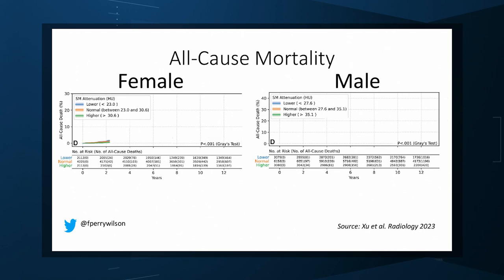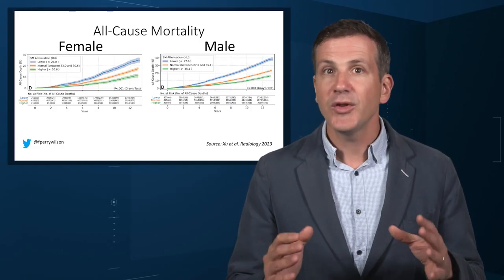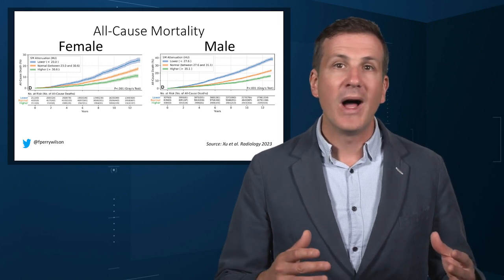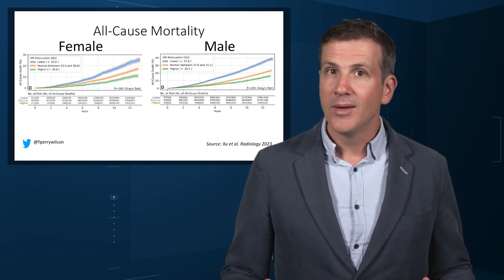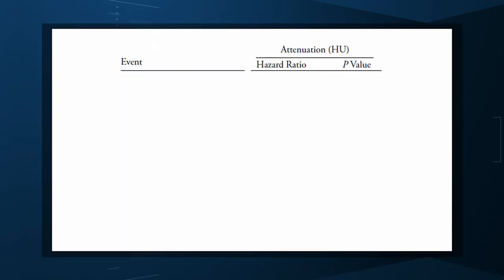Would knowledge about the patient's body composition help predict their ultimate outcome? It would. The best single predictor found was skeletal muscle attenuation. Lower levels of skeletal muscle attenuation means more fat infiltrating inside the muscle, so lower is worse. You can see from the all-cause mortality curves that lower levels were associated with substantially worse life expectancy. It's worth noting that these are unadjusted curves, so the authors adjusted the findings for age, diabetes, heart disease, stroke, and coronary calcium score — which are also calculated from the same CT scans.